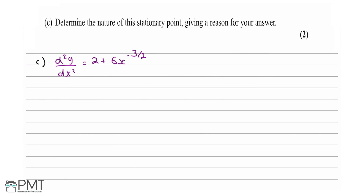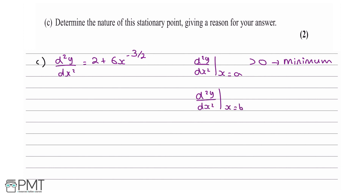Part C asks us to determine the nature of the stationary point and give a reason. To determine the nature, we use the second derivative test: if d squared y by dx squared at x equals a is greater than 0, the stationary point is a minimum. If d squared y by dx squared at x equals b is less than 0, it is a maximum.